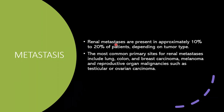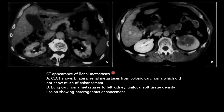Renal metastases are present in approximately 10 to 20% of patients. The most common primaries are lung, colon, breast carcinoma, melanoma, and reproductive organ malignancies such as testicular or ovarian carcinoma. CCT shows bilateral metastasis from colonic carcinoma which did not show any enhancement. This is a case of lung carcinoma metastasis to the left kidney, showing a unifocal soft tissue density lesion with heterogeneous enhancement.